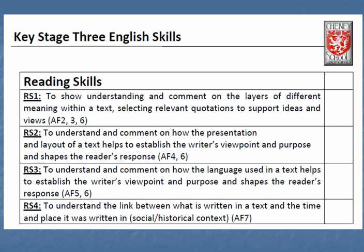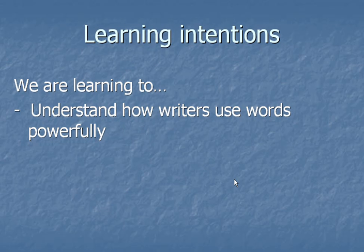Now what does that actually mean? If you look at that in terms of our reading skills, we talk about four different skills you need for reading and you'll notice that this skill is here — it's reading skill three: understanding and commenting on how the language helps us to respond to the text. Put more simply, we're learning to understand how writers can use words powerfully, looking at the precise words and phrases that they use and being able to explain how that influences our response as a reader.